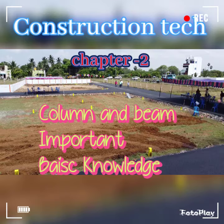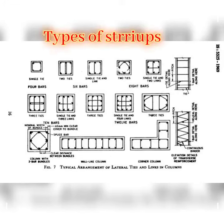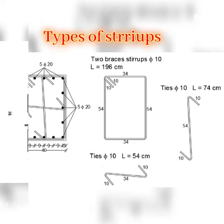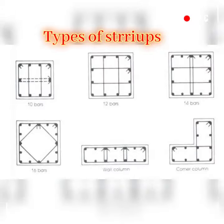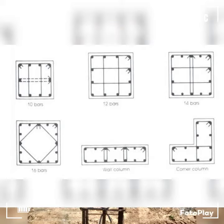Stirrups are in the position of the leg. There are different types of stirrups.